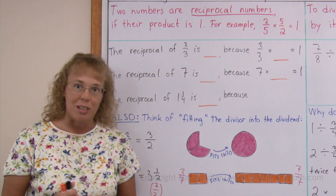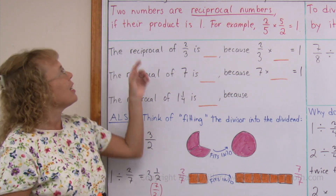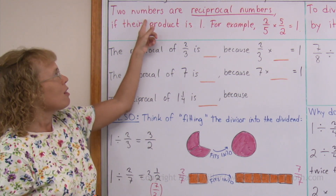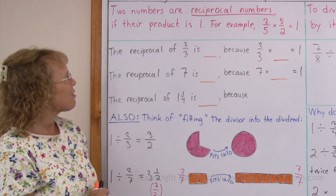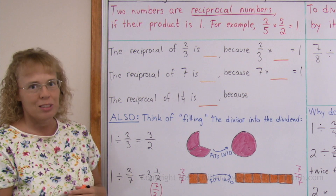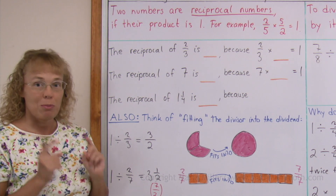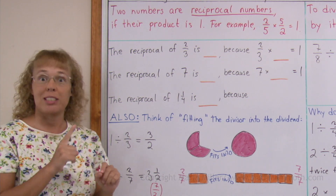Now, what are reciprocal numbers? Two numbers are reciprocal numbers if their product is 1 — if you multiply them, you get 1.